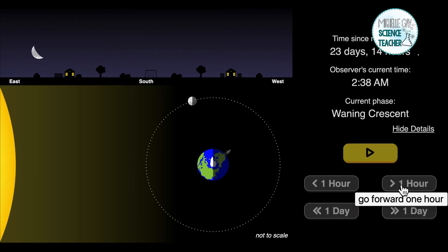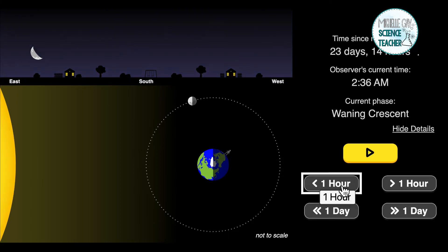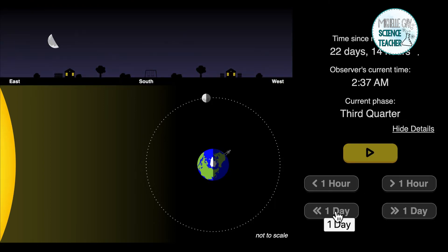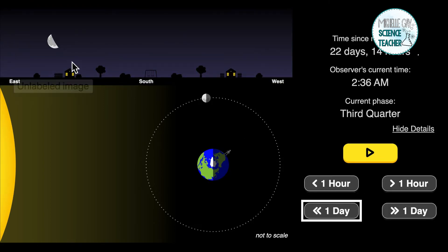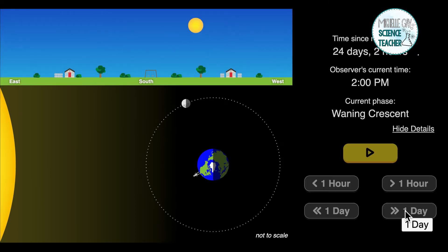Now let's look. Now we're in the current phase of the waning crescent. Let's go back a little bit a day. Now we are looking at the third quarter. We're at the third quarter after the waning gibbous.